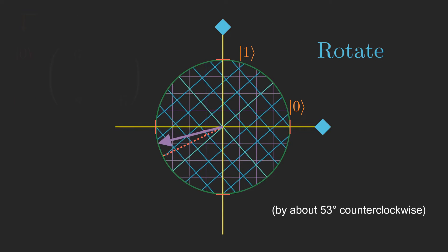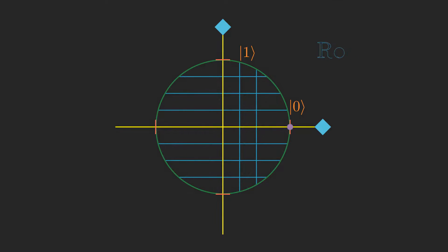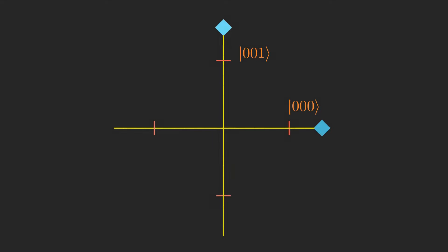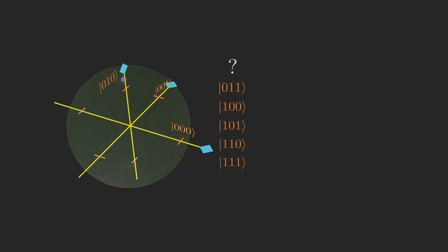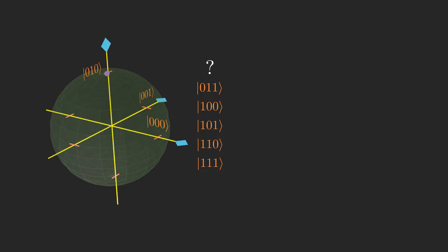Unfortunately, to express even just a two-qubit system geometrically in this way, we already need four spatial dimensions. So instead, let's remember Geoffrey Hinton's advice while we go about things more algebraically.